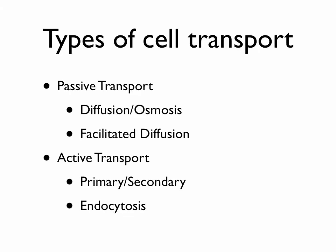There are at least two types of cell transport. The first kind is passive transport, where a cell doesn't need to use any of its cellular energy, or ATP, to allow something to come in or go out of the cell. There are two types of passive transport: diffusion and osmosis, and then something called facilitated diffusion.